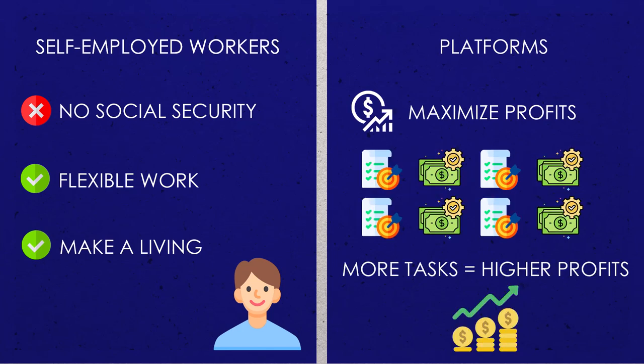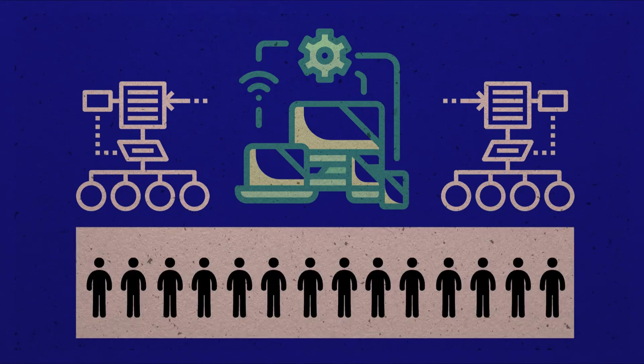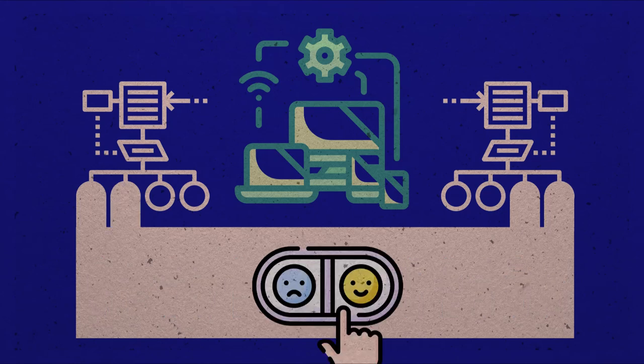The more tasks are completed through the platform, the higher the profits for the platforms. For that, many of the digital platforms use algorithmic management systems to regulate the supply of workers and their behavior.